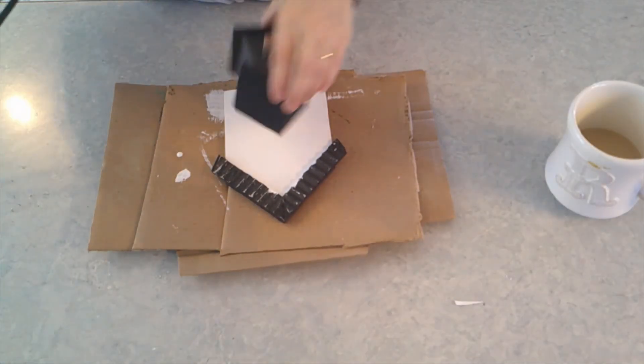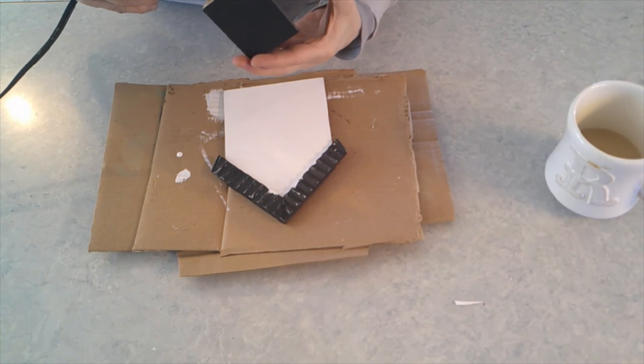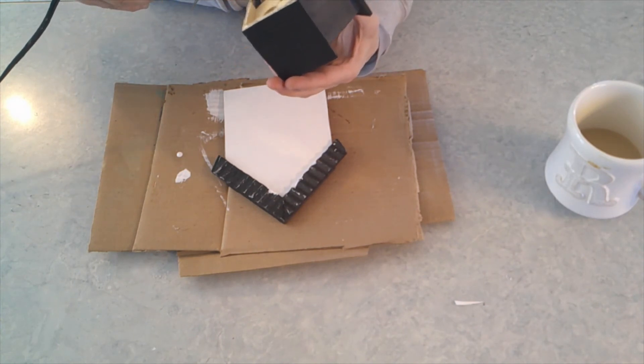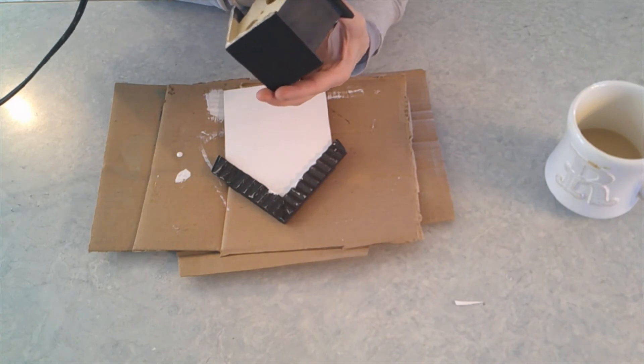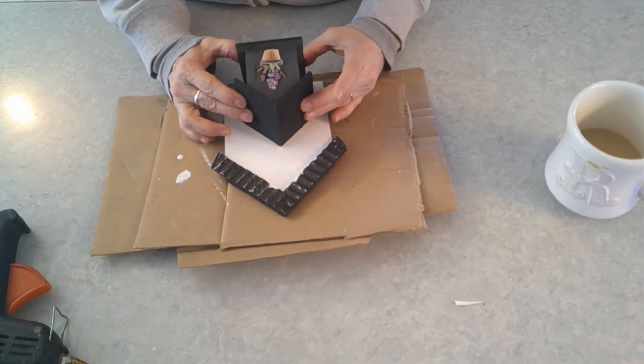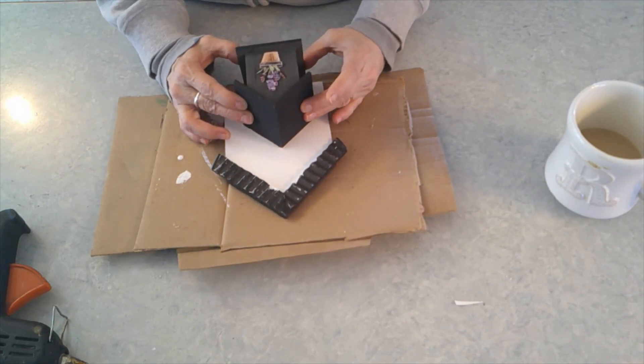Then I glued that birdhouse onto that house frame using hot glue for a more permanent hold. You probably would want to use wood glue but for video purposes again and the dry time I used hot glue. I glued it right to the bottom so it would be able to sit up on its own.